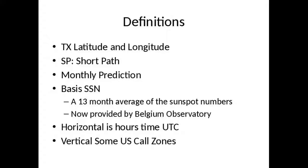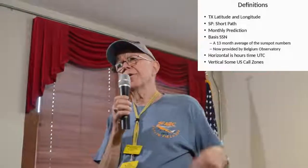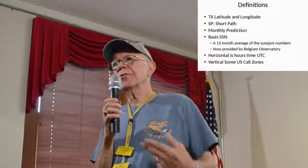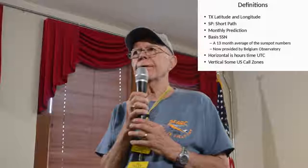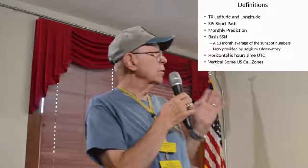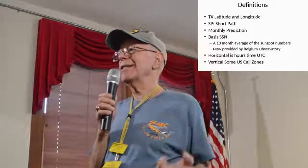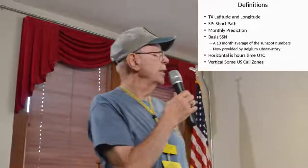The horizontal across the top are UTC hours — it starts at 1, which is 0 to 1, and ends at 24, which is 23 to 24. I took all the times that we had logged and put them in those buckets. The vertical are just some of the U.S. call zones.